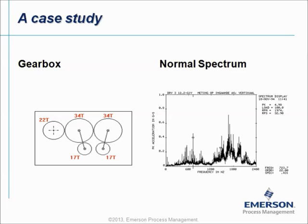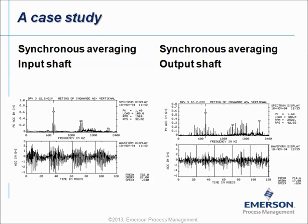If we do synchronous analysis and now the tag is installed on the input shaft. All the data that you see here is purely data related to the input shaft and all the other data is eliminated from the spectrum. We still see the gear mesh frequency, the harmonics and a little bit side bands but not too much.